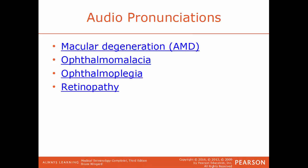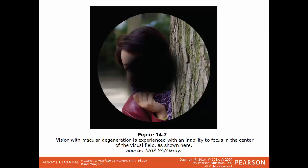Macular degeneration, sometimes referenced as AMD — age-related macular degeneration — is the leading cause of severe vision loss in people who are 60 years old and older. The macula is the center part of the retina. As we age, it starts to break down and deteriorate, so when the person is looking forward they see a blind spot in the middle of their field of vision. As the macula gets worse, the circle will grow. Ophthalmomalacia is the softening of the eyeball itself. Ophthalmoplegias is a paralysis of the muscles surrounding the eye. Retinopathy is a general term that refers to any disease that affects the retina. In someone with macular degeneration, as the condition gets worse, the blind spot gets larger and larger until it fills up the whole field of vision and the person is completely blind.